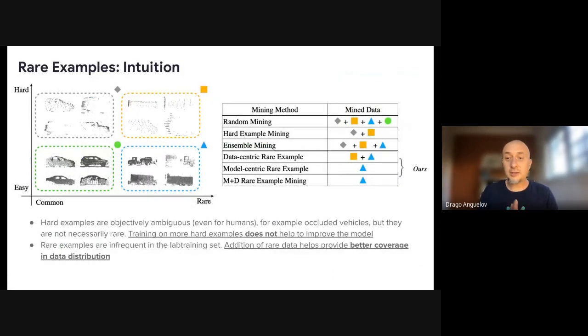So here in this slide, I will show you a little bit of intuition about what rare examples mean and how they differ from hard examples. So let's have Y-axis easy to hard, and on the X-axis we have common to rare. So when you look at this, you will see that hard examples are objectively ambiguous, even for humans. For example, occluded vehicles can be very hard. You barely see some of the parts of it, or you see very few points. It's hard to make a bounding box.